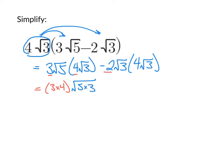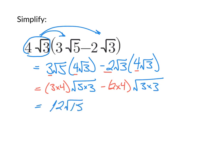For the next term, we take the two numbers outside: the minus 2 and 4, and multiply them together. Underneath the square root, we have 3 times 3. When we simplify, we're left with 12√15 minus 8√9.